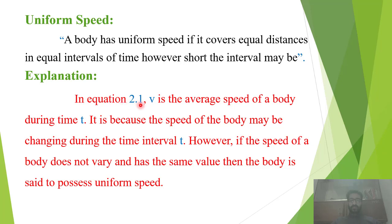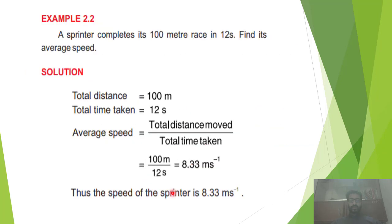A body has uniform speed if it covers equal distances in equal intervals of time, however short the interval may be. In equation 2.1, V is the average speed of a body during time T, because the speed of the body may be changing during the time interval. If the speed of a body does not vary and has the same value, then the body is said to possess uniform speed.